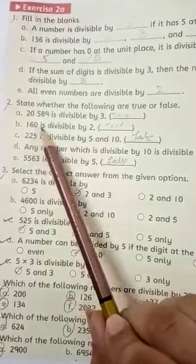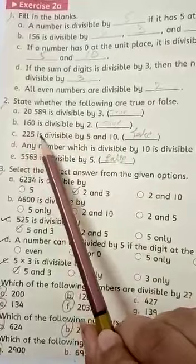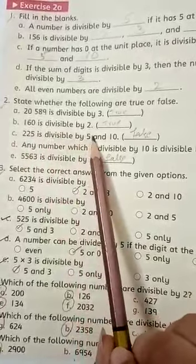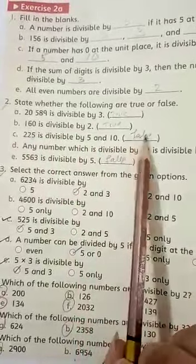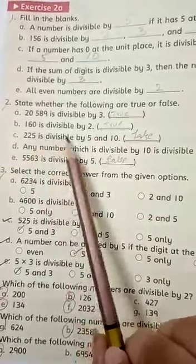160 is divisible by 2. True. 225 is divisible by 5 and 10. False. Because it will only be divisible by 5.